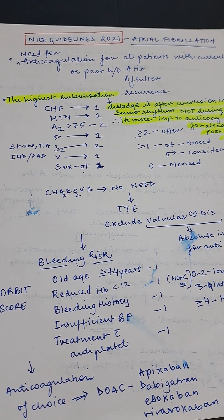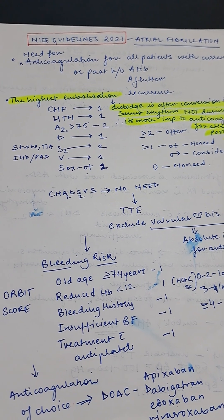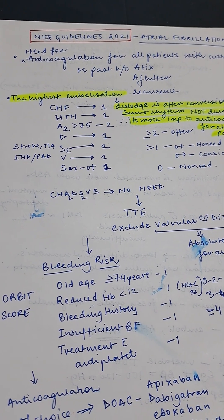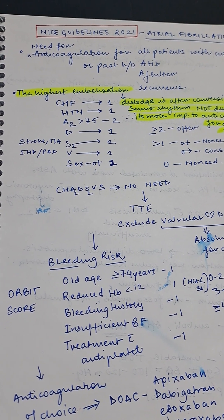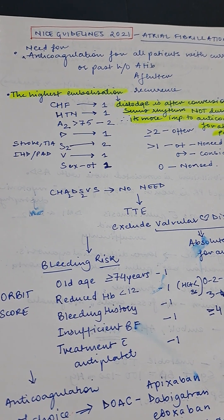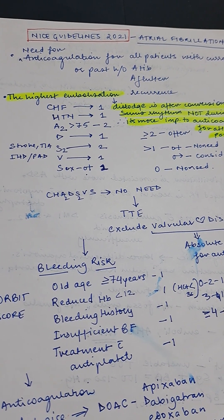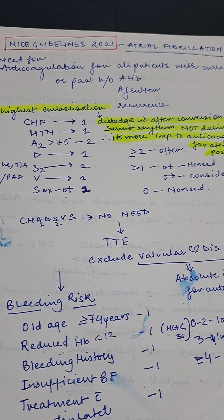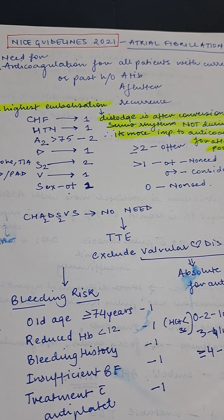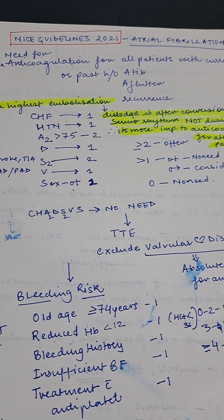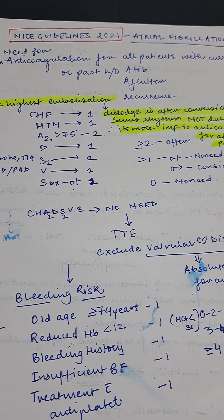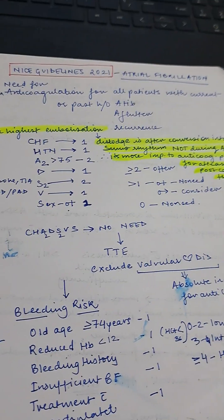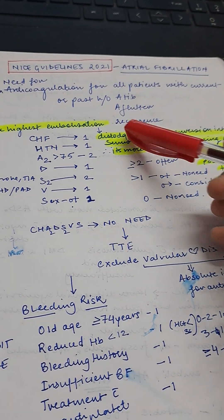Whenever a patient has an irregular heart rate and absent P-waves on ECG, you will assess the need for anticoagulation for all such patients with atrial fibrillation, and with a history of atrial flutter or any recurrence after cardioversion.